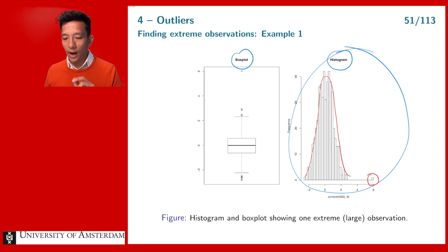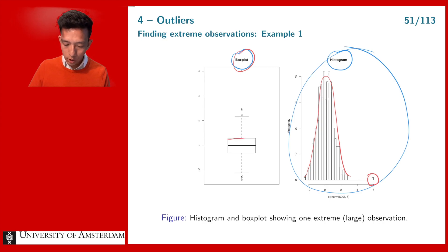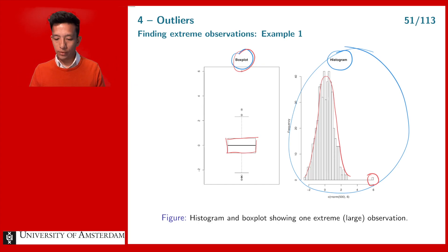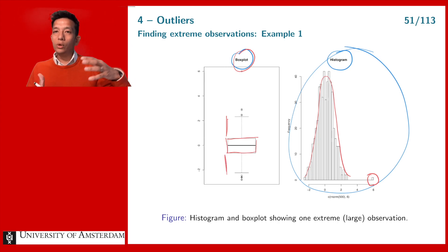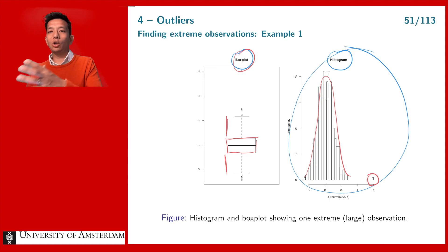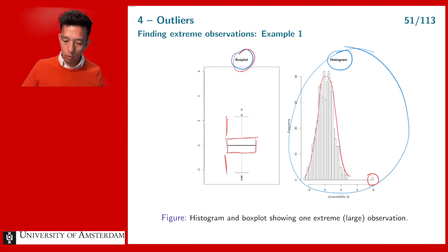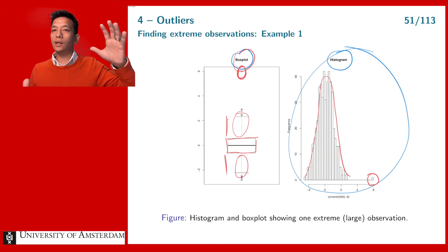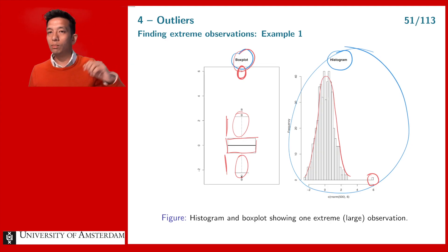Another way to identify extreme points is the box plot, where the box contains the majority of the data — it's most likely that you find observations in the box. Then you have the whiskers, where we allow observations to be somewhat larger or smaller than expected. But you can see one observation that is far away from the box and the whiskers — it is a very extreme observation. Box plots and histograms are very important and efficient tools to detect extreme observations in a one-dimensional setting.